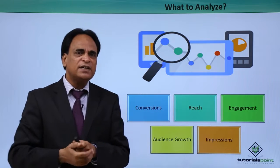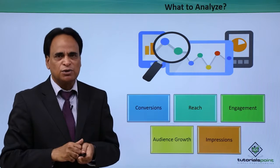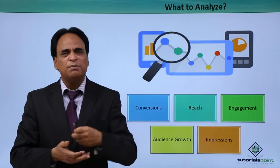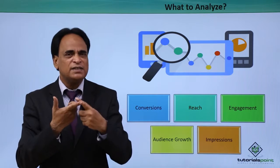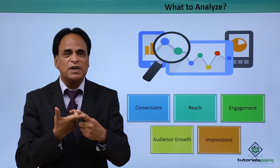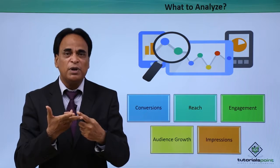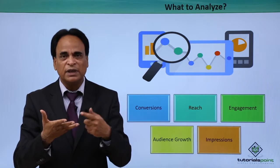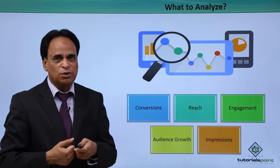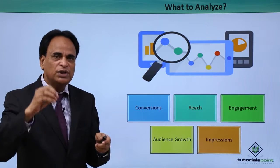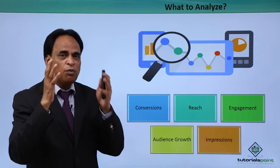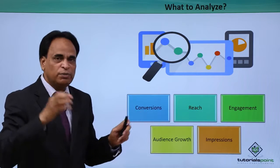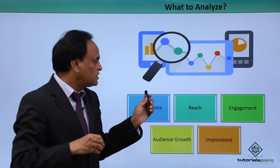What to analyze? What are the key factors to analyze in your Social Media Marketing campaign? The conversions — how many conversions are happening in terms of the goals you have set. If you are selling something, how many products have you sold? If you are getting opt-in lists, how many people have registered? If you want people to download, how many downloads are happening? These are your conversion goals, and you need to analyze them per week, per month, and over the next three months.